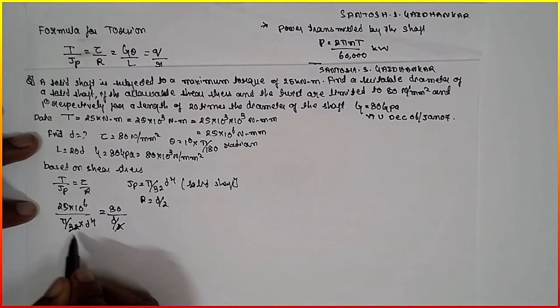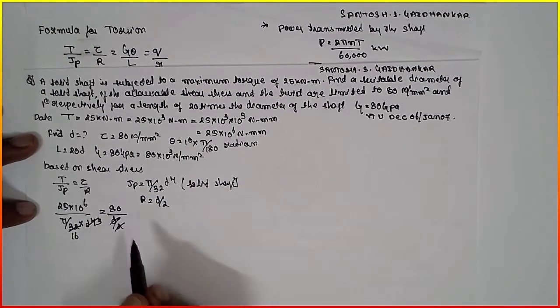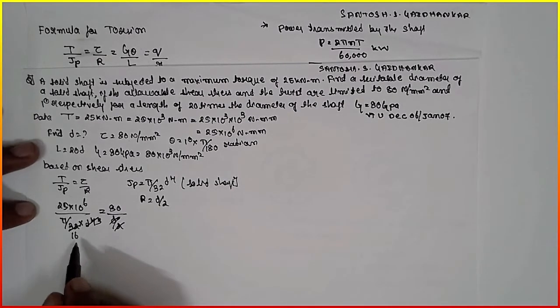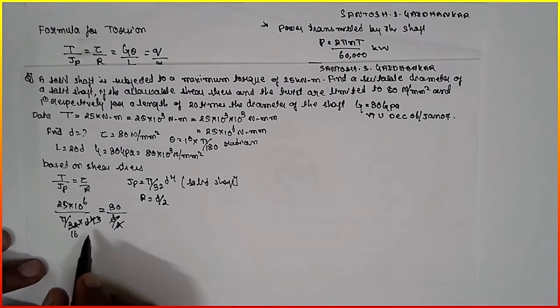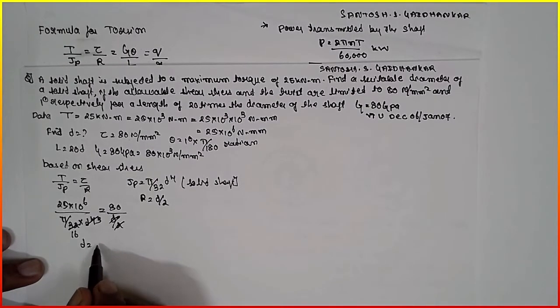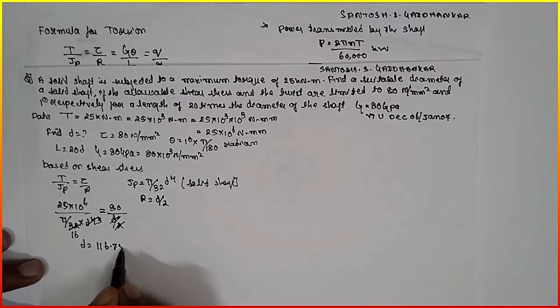2 and 32 becomes 16. This D cube. Cross multiply, the D value will be D equals 116.75 mm.